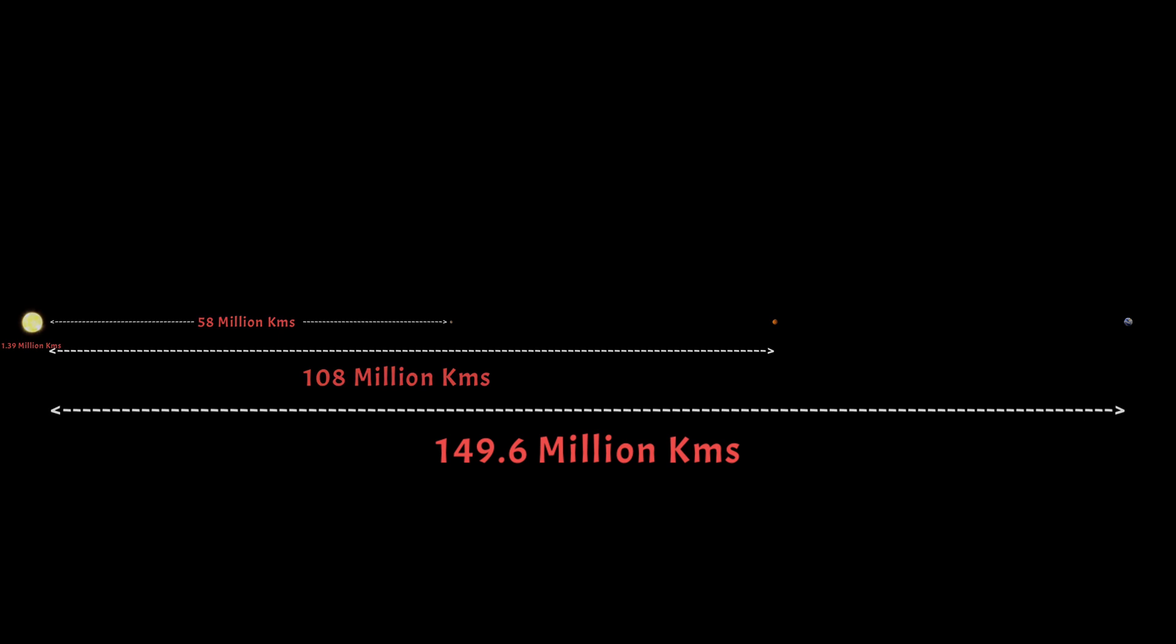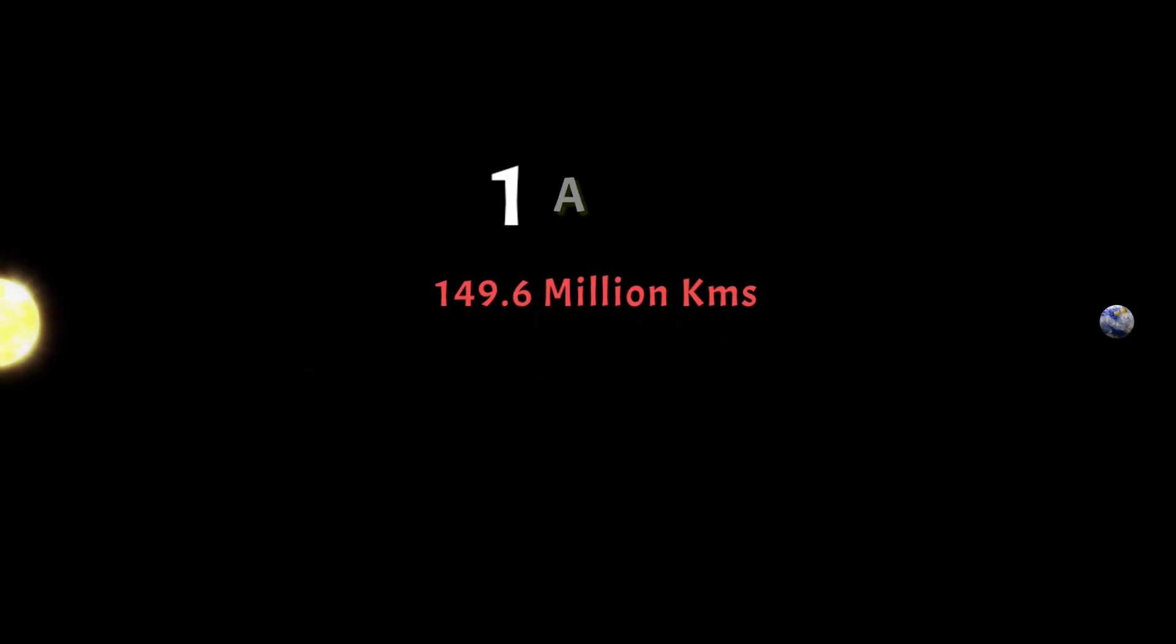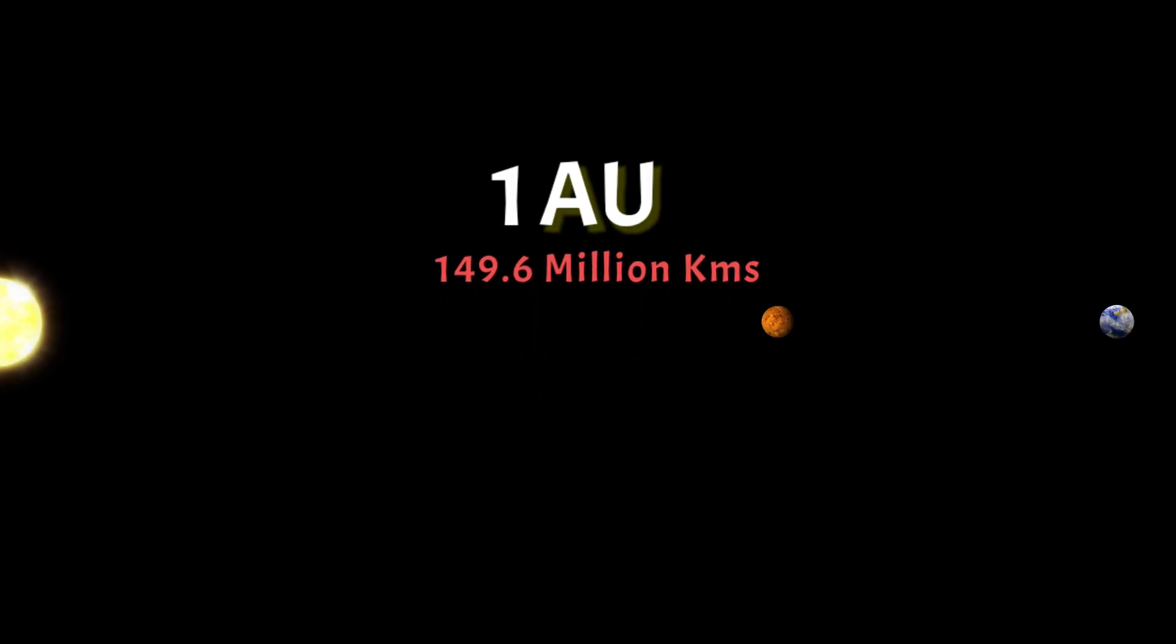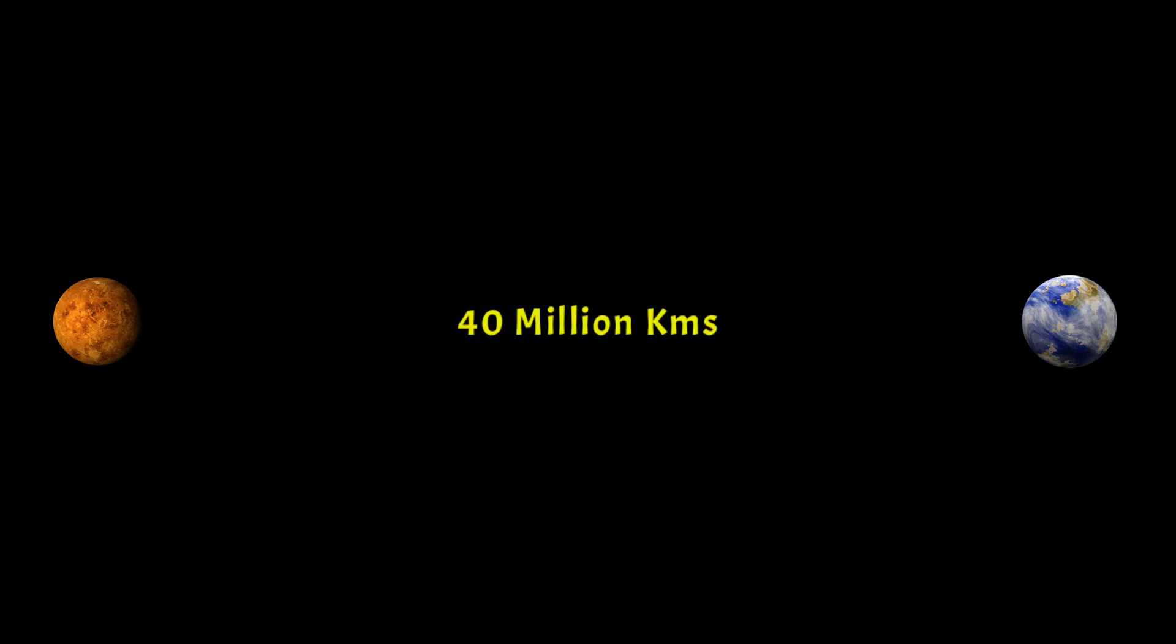This distance is called one astronomical unit. That way Venus's distance is 0.7 AU and Mercury is 0.4 AU. On one side of Earth's orbit is Venus and on the other is Mars, with 40 million kilometers between Venus and Earth's orbit.